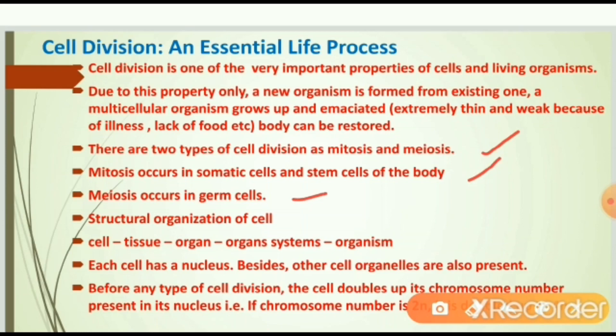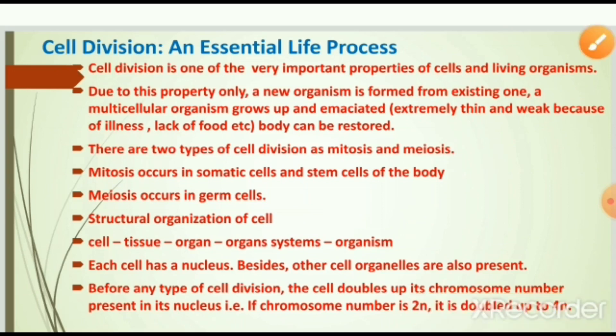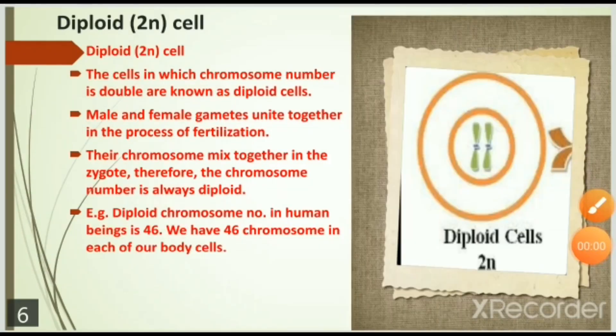The structural organization of the cell is: cell, tissue, organ, organ systems, and organism. Each cell has a nucleus; besides that, other cell organelles are also present. Before any type of cell division, the cell doubles up its chromosome number present in its nucleus — that is, chromosome number is 2n and it doubles up to 4n.